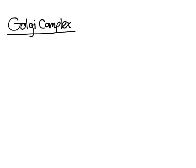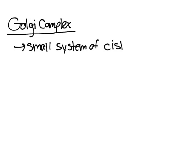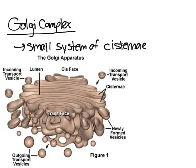In this video I'm going to talk about the Golgi complex. It's a small system of cisternae — let me show you a picture of it. Below in the picture it's called the Golgi apparatus or Golgi complex; it's the same thing, there are a bunch of different names for it.